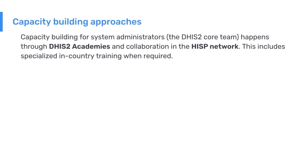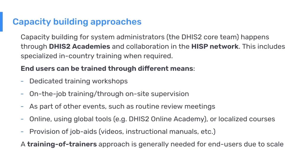For the core team of system administrators, the primary way of building capacity is through DHIS2 academies and through various collaborations within the HISP network. This includes workshops on specific thematic areas, as well as specialized in-country training when required. For end users, there are dedicated training workshops, on-the-job supervision, and capacity building can be built into other routine activities such as review meetings.